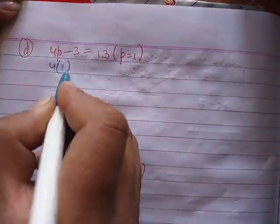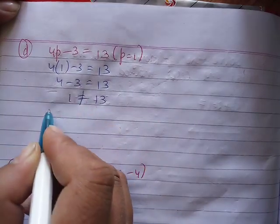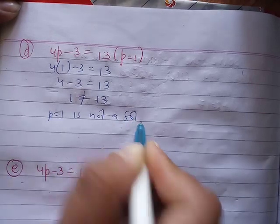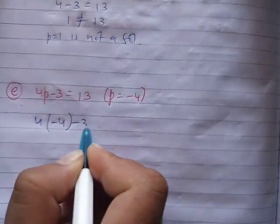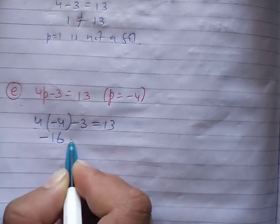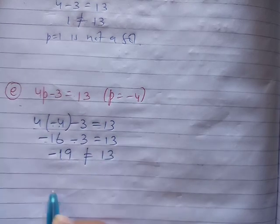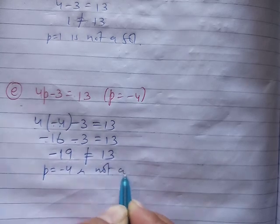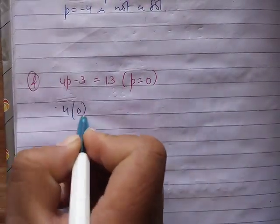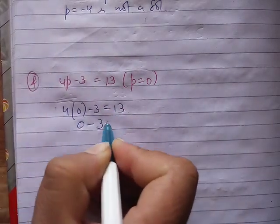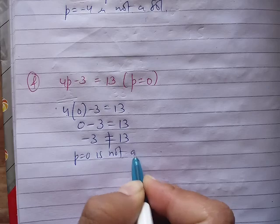Next, for the p-value. Put p equal to 1: 4 times 1 minus 3 equal to 13 gives 4 minus 3 equal to 1, which is not equal to 13, so p equal to 1 is not a solution. Put p equal to minus 4: 4 times minus 4 minus 3 equal to minus 16 minus 3 equal to minus 19, not equal to 13. Put p equal to 0: 4 times 0 minus 3 equal to minus 3, not equal to 13, so p equal to 0 is not a solution.